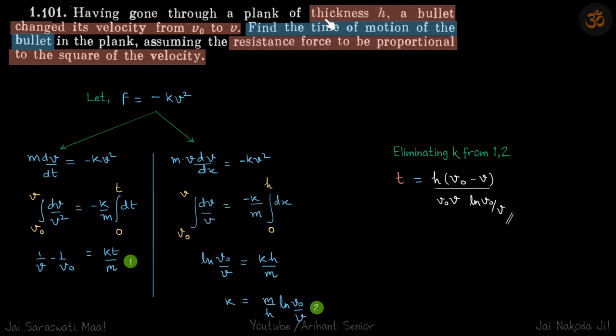A bullet passes through a plank of thickness H and it comes out with a velocity V. So it enters with V naught and leaves with V. We need to find the time of motion of the bullet if resistance force is proportional to the square of velocity.